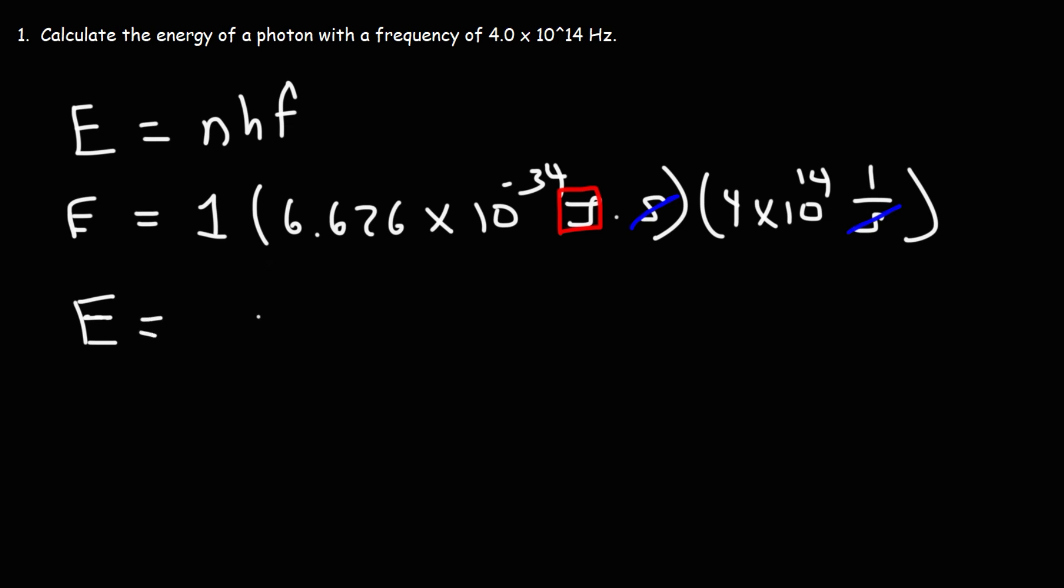And so the energy is going to be 2.65 times 10 to the negative 19 joules. So that's the energy of this particular photon.